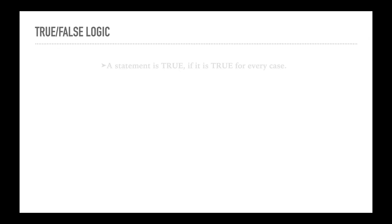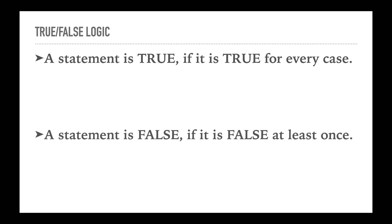So in true-false logic, the basic concept is a statement is true if and only if it is true for every case. And because of that, a statement is false if it is false at least once. So something could be true four billion times, and if there is one example where it is not true, it is considered false.